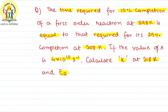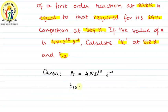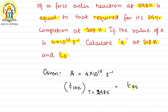So, let me see what is given. The given data: the value of A is given — that is the pre-exponential factor — 4 × 10¹⁰ s⁻¹. The time required for 10% completion at T = 298 Kelvin is equal to the time for 25% completion at T = 308 Kelvin. This data is already given.